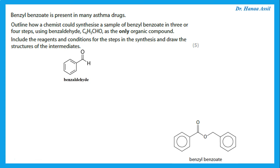Phenylbenzoate, found in many asthma drugs, needs to be synthesised in three or four steps using benzaldehyde as the only organic starting material. The product is an ester with two phenyl groups. From benzaldehyde, the first step is to oxidise the aldehyde to give the acid — benzoic acid — using potassium dichromate in the presence of sulfuric acid.